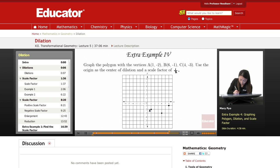So this was A, B, and C. So our polygon is a triangle. And then using the origin as the center of the dilation and a scale factor of 1 over 2.